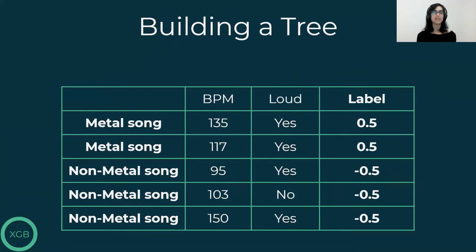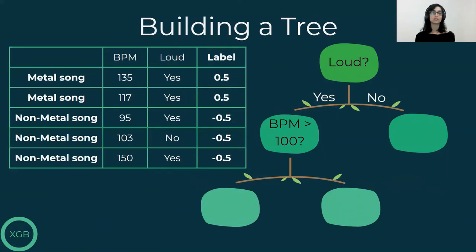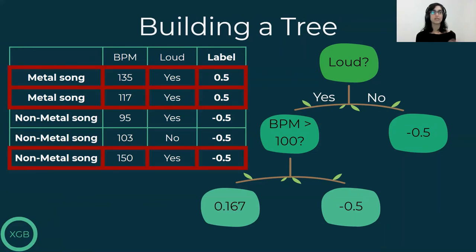And then we build the first tree. That tree tries to predict the new labels. So let's get some intuition regarding how to predict the labels now that they're numbers and not classes like we saw before. If we split by loudness, we look at all the songs that are not loud. And the prediction we put in the right leaf is the average label of these songs. In this case, it's 1 song and its label is minus 0.5. Then when we split by BPM, again, we get on the right leaf, 1 song and its label is minus 0.5. On the left leaf, we get 2 metal songs and 1 non-metal song. So the prediction is the average of 0.5, 0.5, and minus 0.5, which is 0.167.